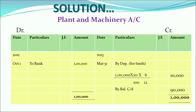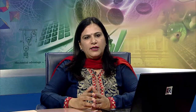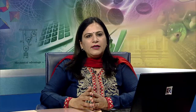On 1st April 2013, the balance brought down is 90,000. Depreciation on 31st March 2014 is calculated on the book value: 20% of 90,000 = 18,000. Closing balance = 90,000 minus 18,000 = 72,000. On 1st April 2014, balance brought forward is 72,000.